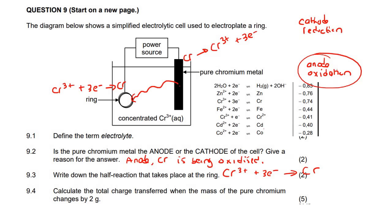Let me explain what we can do here. It says calculate the total charge transferred when the mass of the pure chromium changes by 2 grams. It's actually quite easy. We know that this chromium is going to become 2 grams less because this chromium metal is going to convert into ions. So we need to work out the number of moles quickly so we can use this formula.